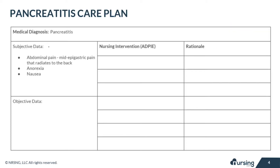The subjective data of our patient may include abdominal pain — it may be mid-epigastric and could radiate to the back. Some patients have significant pain, while others with pancreatitis may experience none at all. The patient might also experience anorexia from not wanting to eat because eating causes more pain when the pancreas makes those enzymes. The patient might have nausea, especially after eating, due to digestive enzymes secreted by the already inflamed pancreas.